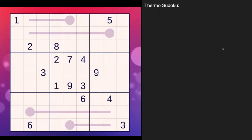Just like in regular Sudoku, each row, column, and 3x3 box must contain the digits one through nine without repeating.